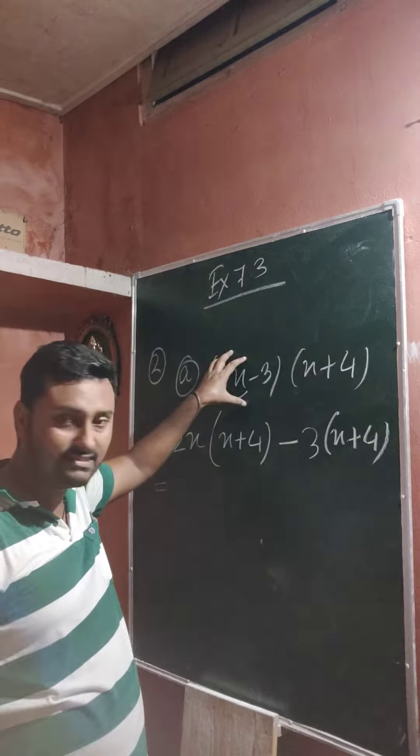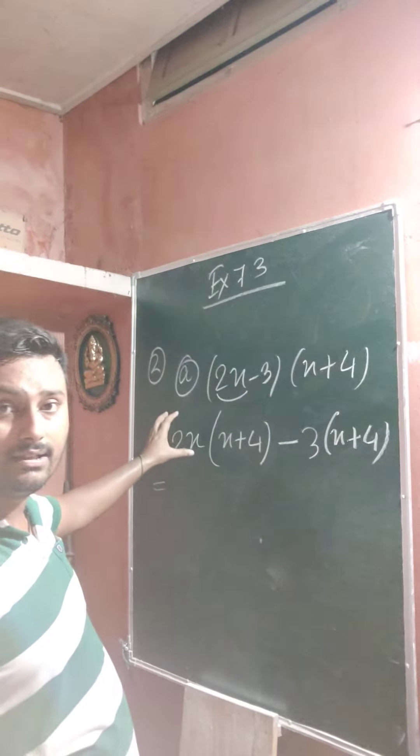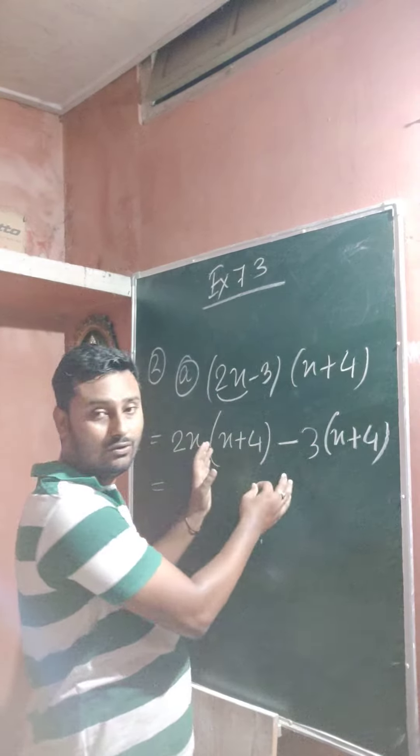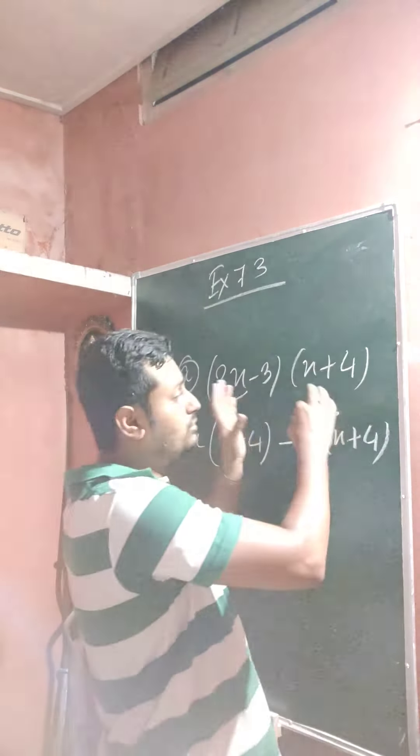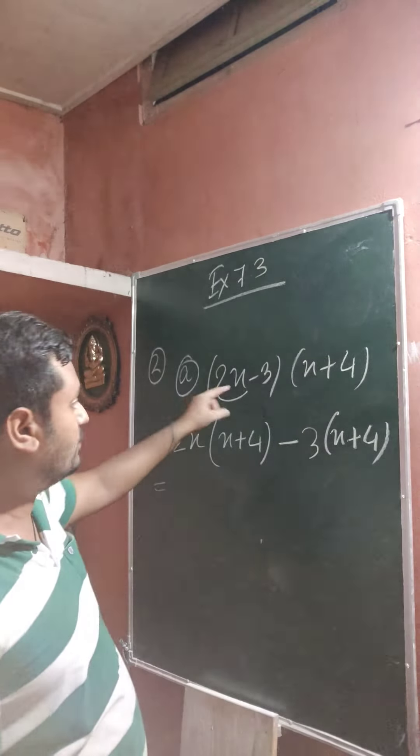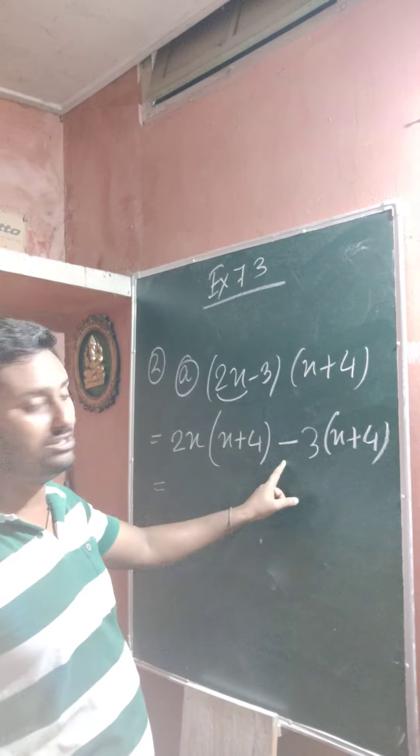So in this case you just take the first part, 2x here. 2x makes whole into this part, x plus 4. No need to do any change in the second remaining part. Clear? After that which symbol is present here? That symbol comes to this position. So minus.